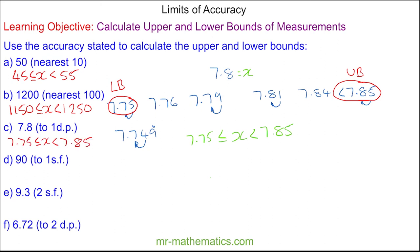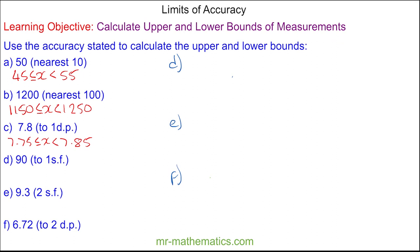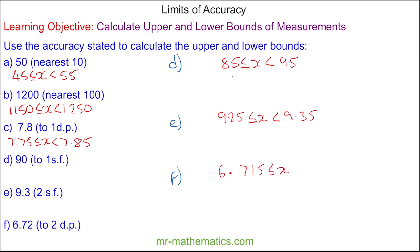Try working out the inequalities for D, E, and F — pause the video and resume when you're ready. For question D, the limits of accuracy are: 85 ≤ x < 95. For question E: 9.25 ≤ x < 9.35. And for question F: 6.715 ≤ x < 6.725.